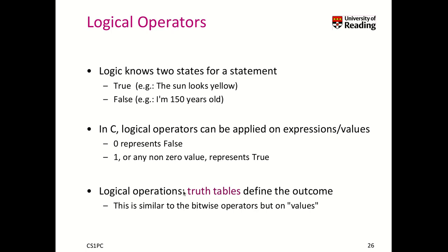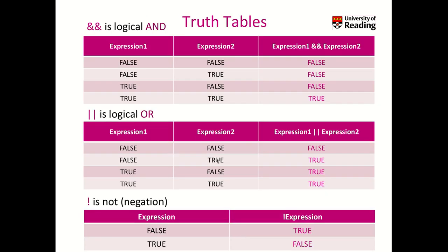We have truth tables that define the outcomes. Logical operators are rather similar to bitwise operators, but they work on values. We can have a logical AND, which is two ampersands; a logical OR, which is two pipe symbols; and a NOT, which is the exclamation mark — the negation.